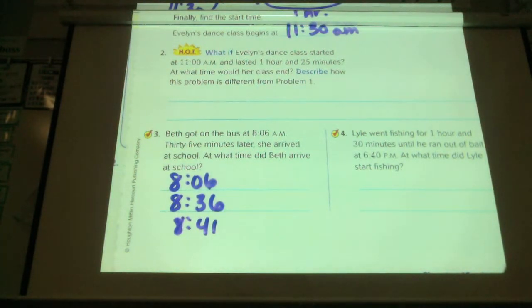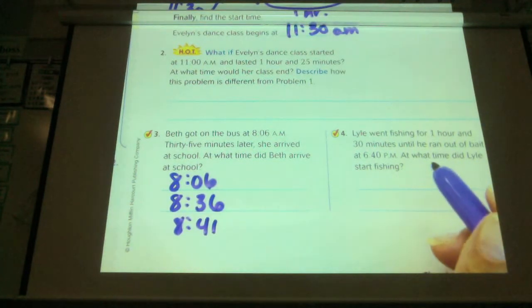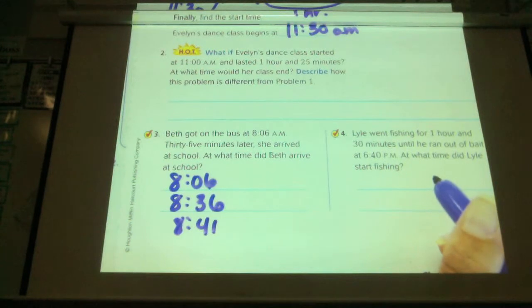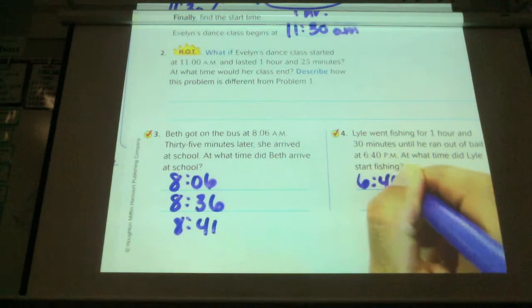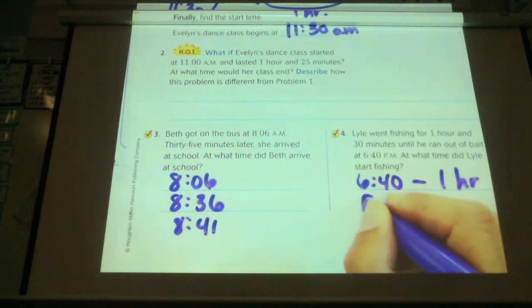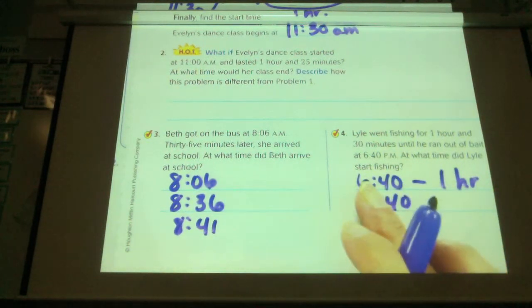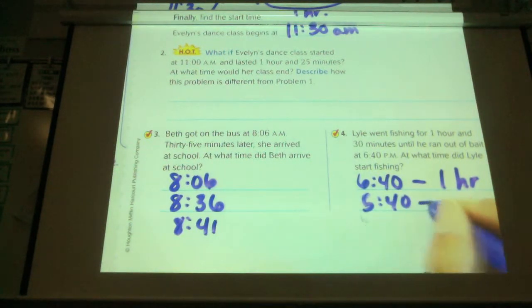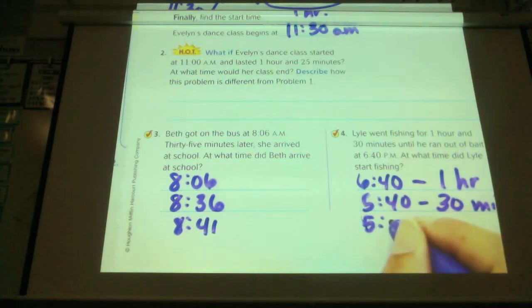Lyle went fishing for one hour and 30 minutes until he ran out of bait at 6:40. At what time did he start? So he's ending at 6:40. I need to find out when he starts. Am I going to work forward or backward? Okay, we're going to start at 6:40 and we're going to go backwards. One hour. So minus one hour will get us to 5:40. And now I'm going to minus another 30 minutes. So 5:40 minus 30 minutes will give us 5:10.